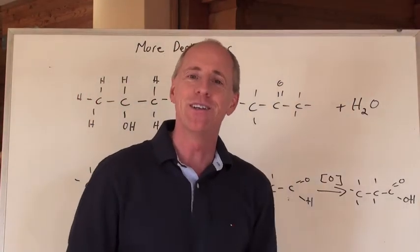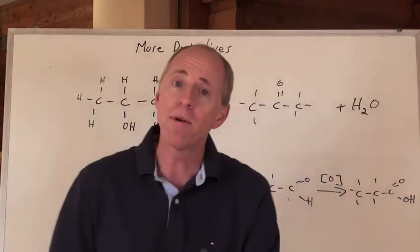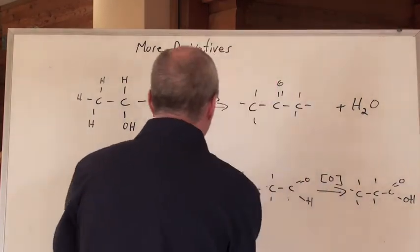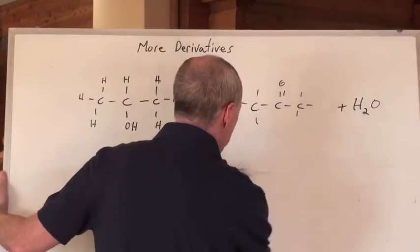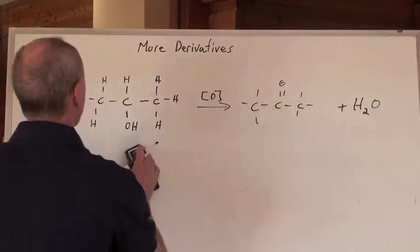So there you go. A secondary alcohol makes a ketone, a primary alcohol makes an aldehyde. Now, you're going to say, hey Kevin, I remember one other thing you're talking about. You're talking about tertiary alcohols before.